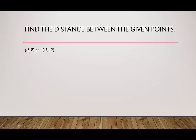Let's look at our first example. We want to find the distance between the points (−3, 8) and (−5, 12). We'll use both the formula and the Pythagorean theorem. Plotting: negative three, up eight gives us the first point; negative five, up to twelve gives us the second point — all the way up there.